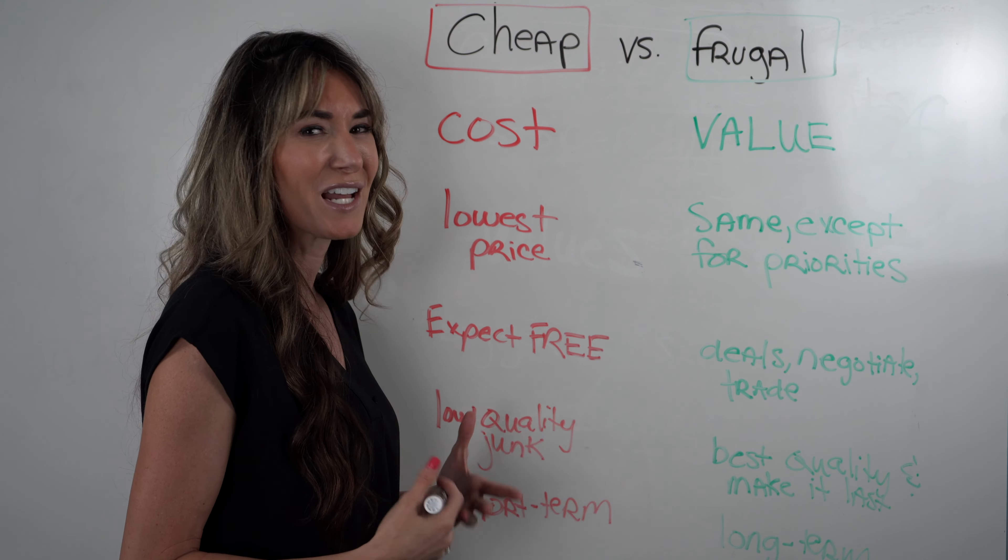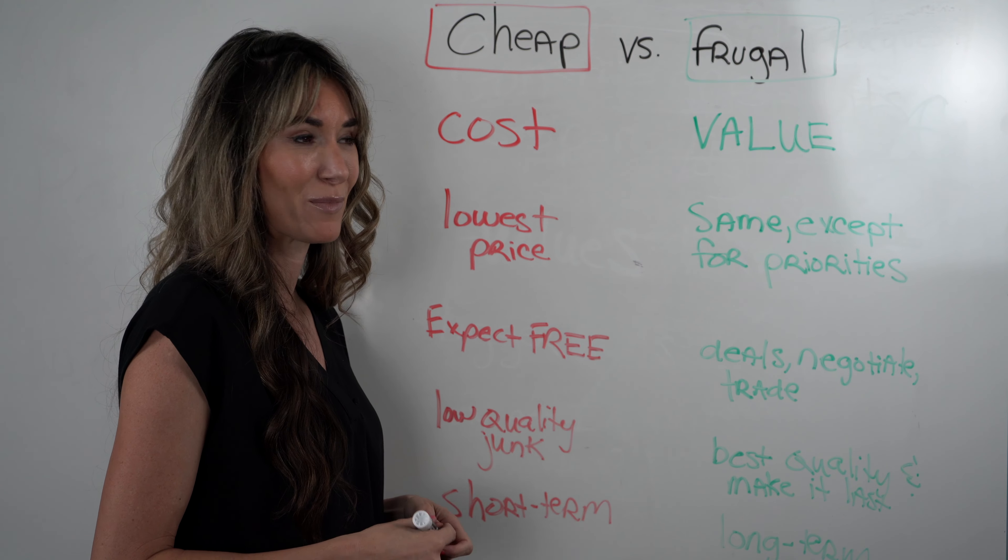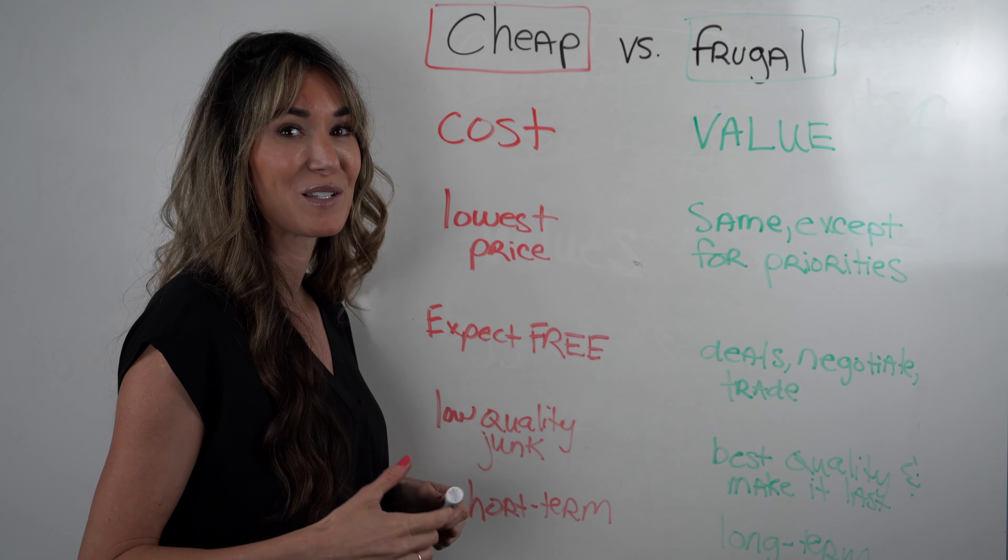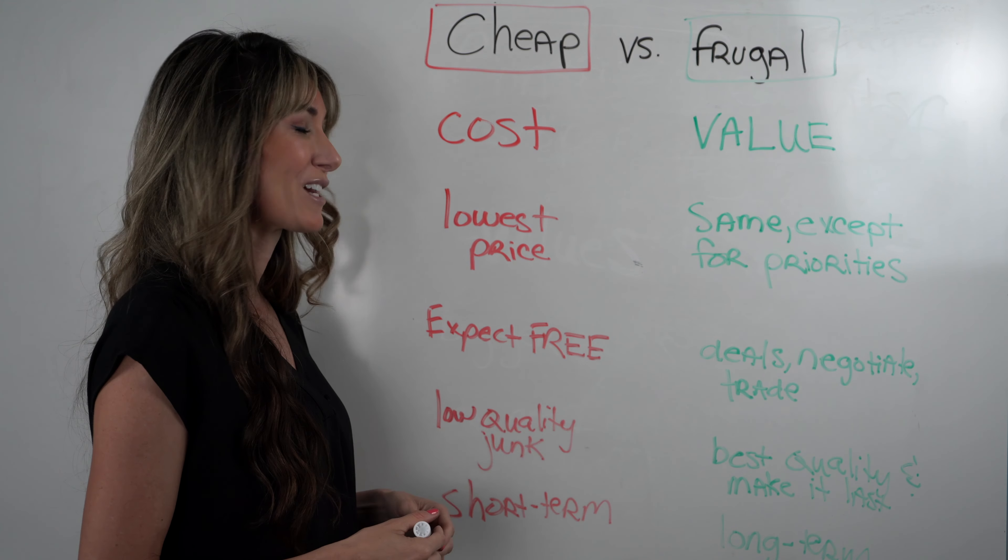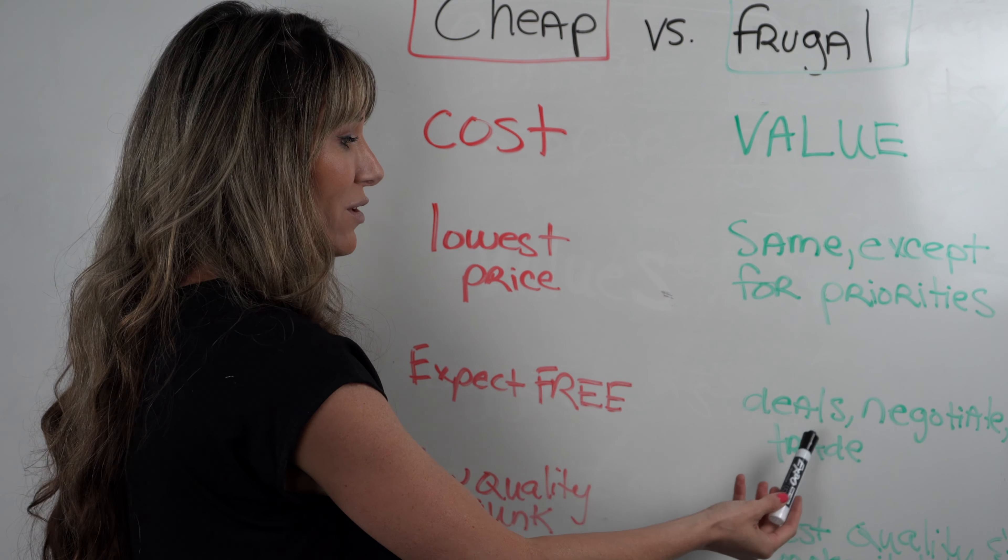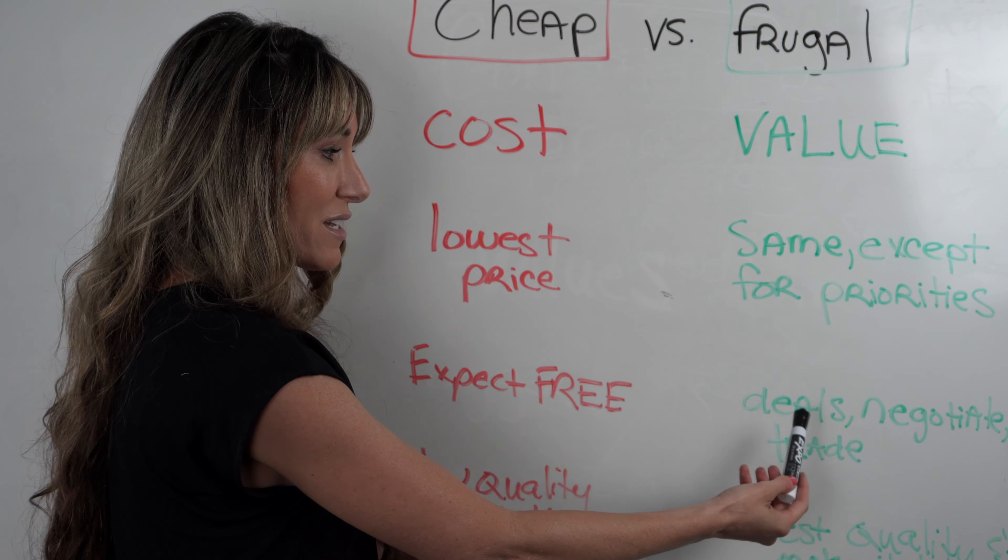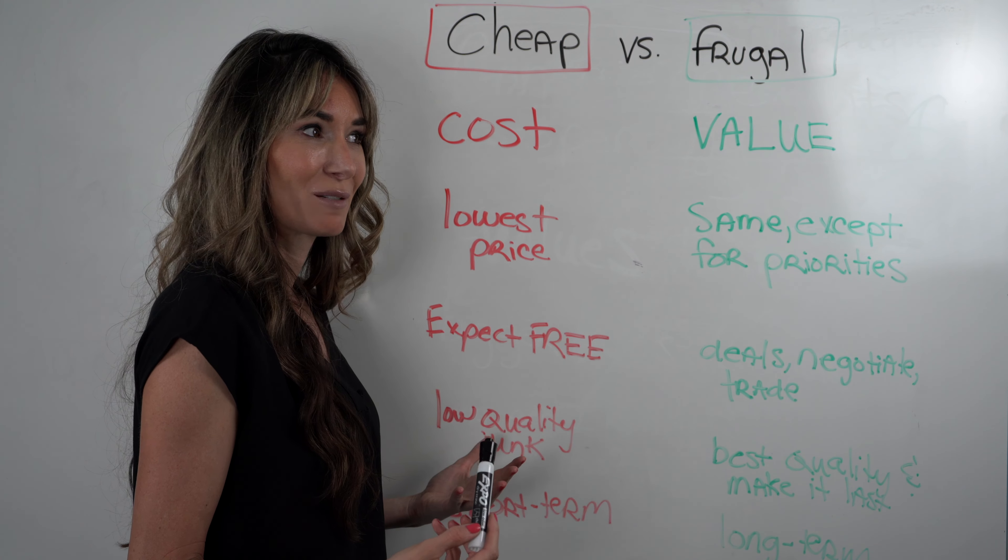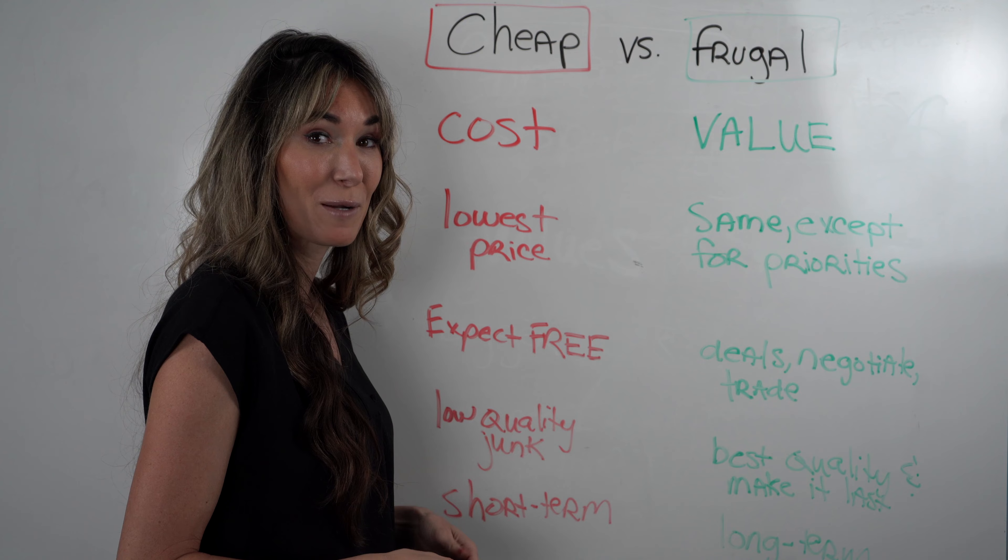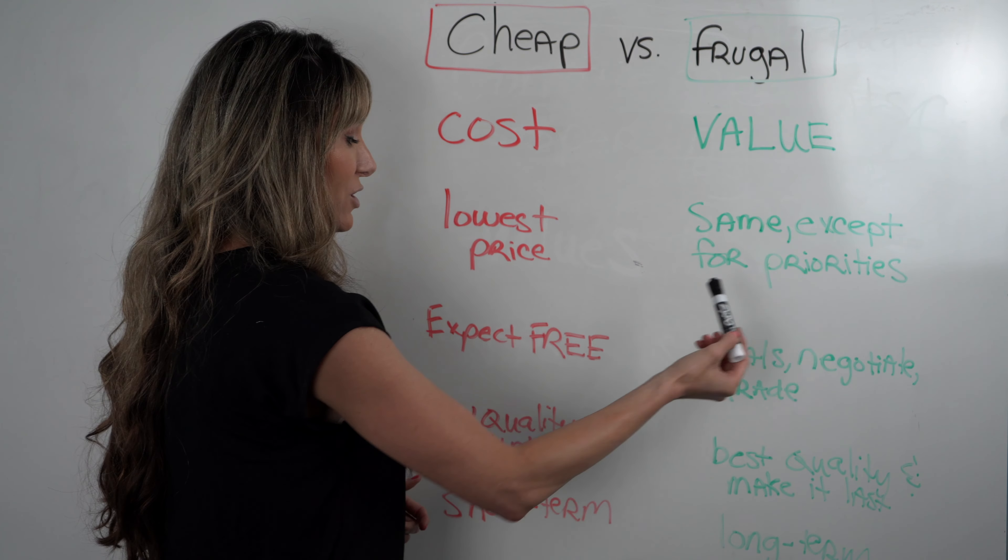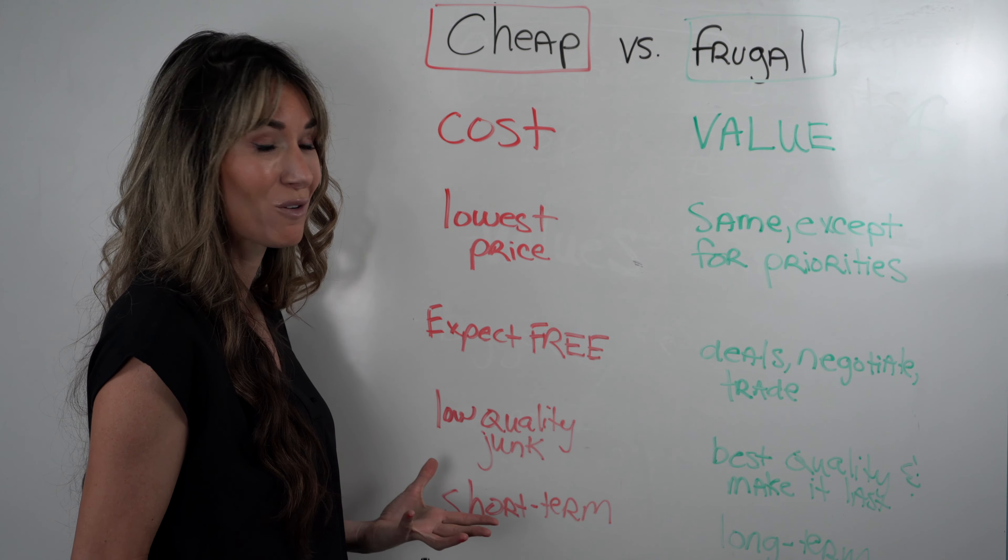They just want to talk to the manager, expect things for free, use coupons that are a year old and they try to get away with it, right? It's kind of embarrassing. Whereas with frugal people, they'll wait for deals or try to make a deal. They'll negotiate. They'll trade. Now, what does this sound like? A real estate investor, right? So it kind of puts you in the mindset of being able to create a win-win situation just versus entitlement.